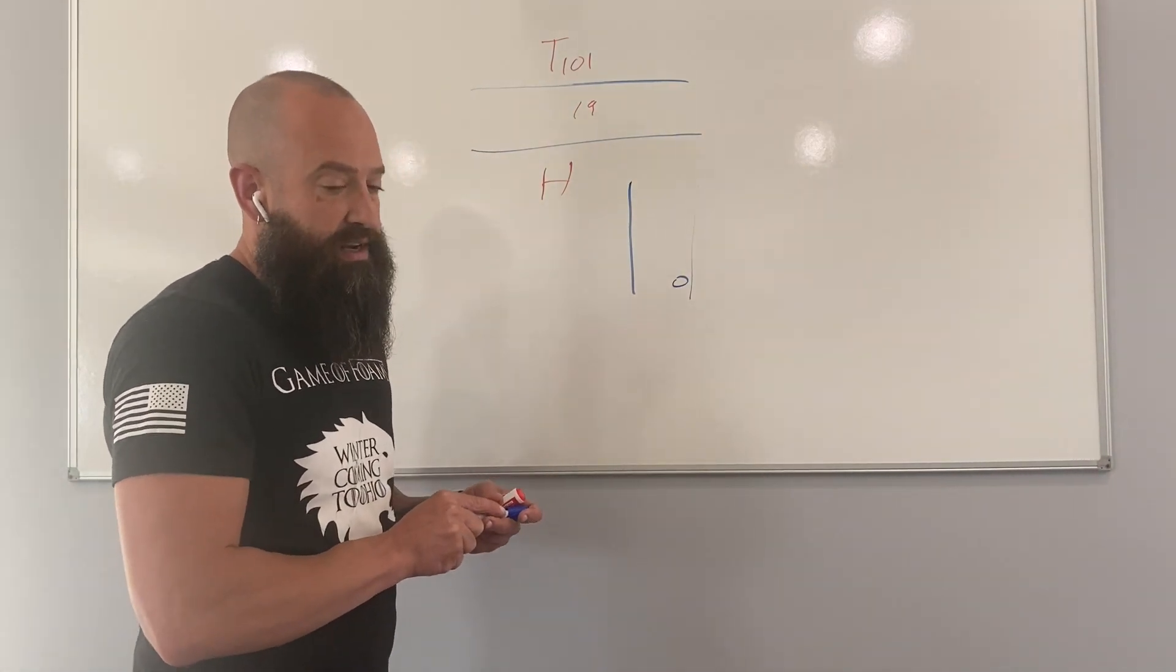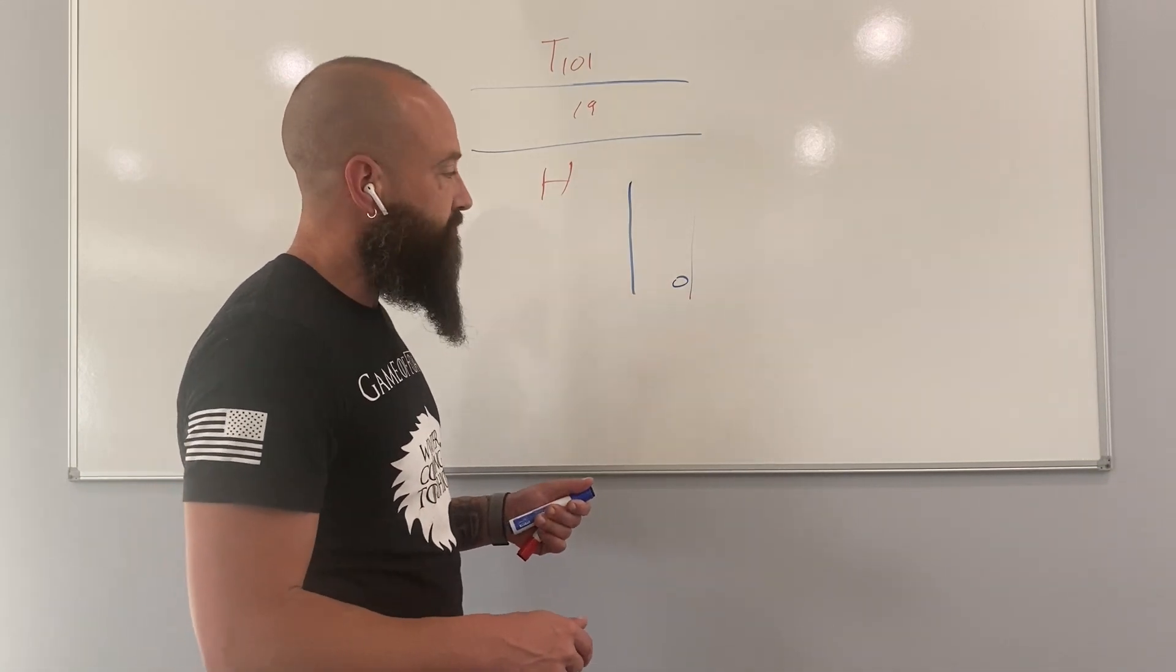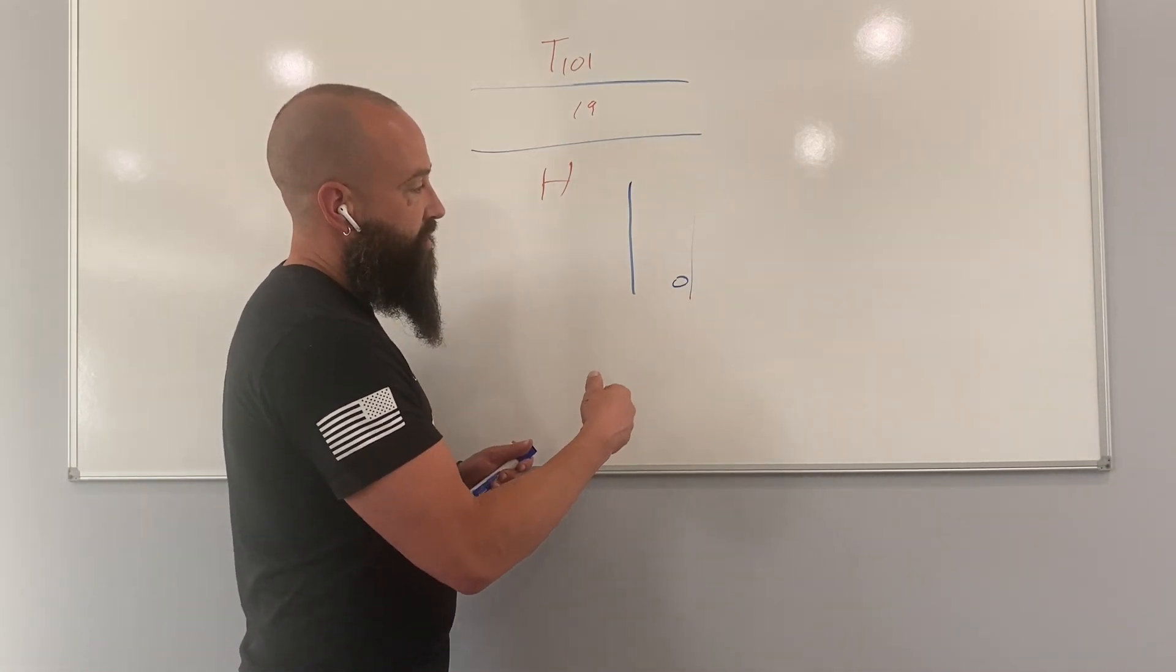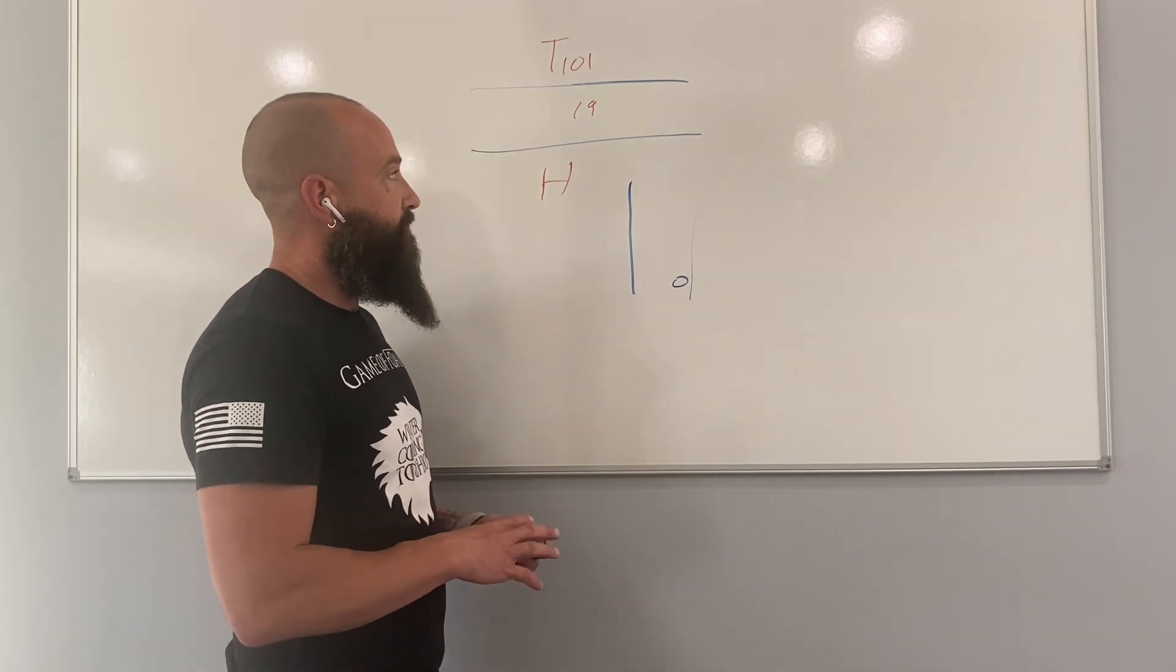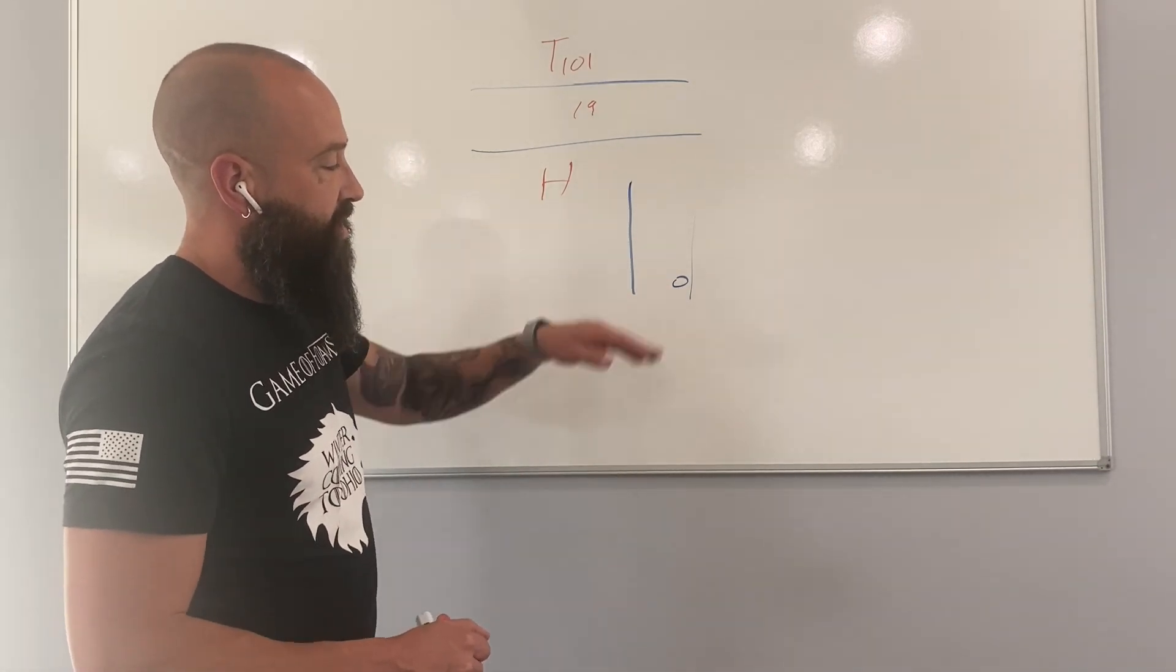So basically you have your three types of heat loss: air infiltration, conductive, and radiant. So R value only measures the conductive.